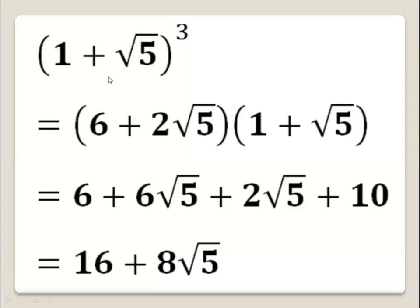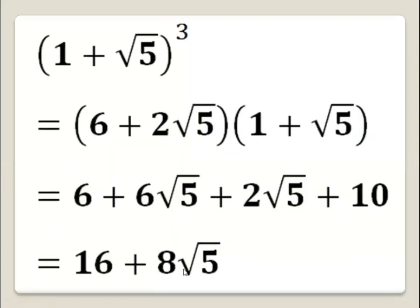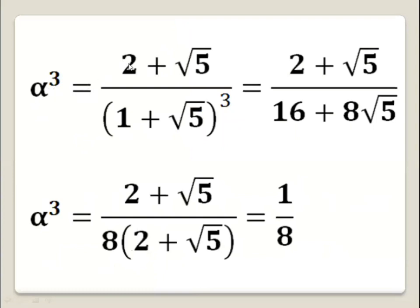Now we have (1 plus square root of 5) cubed equals 16 plus 8 square root of 5. Substituting this into our expression, alpha cubed equals (2 plus square root of 5) all over (16 plus 8 square root of 5).